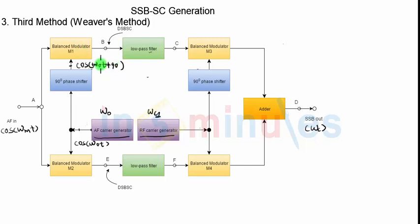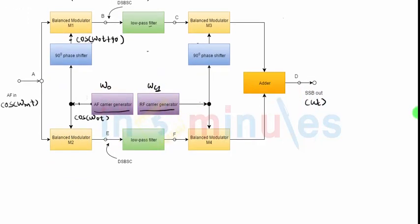Both the balance modulators will multiply the two signals and generate sum and the difference of the input frequencies. So let's write down output of both the balance modulators. Output of first balance modulator will be available on point B and output of the second modulator will be available on point E in our diagram. So let us now first write down output of balance modulator 1. What are the inputs to the first balance modulator? The first input in the form of carrier is cos(omega 0 * t + 90) and this is multiplied by the second input which is my modulating signal cos(omega m * t).